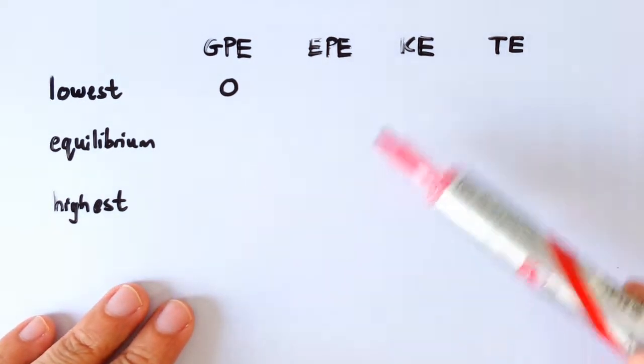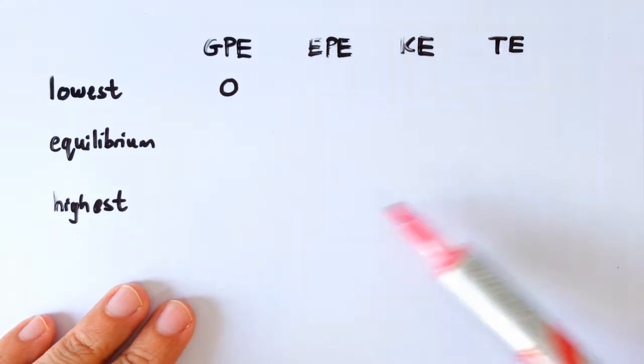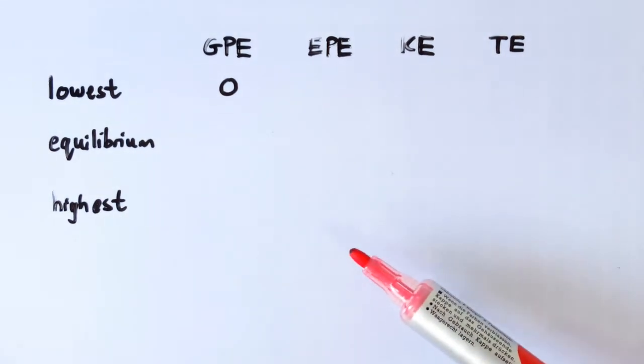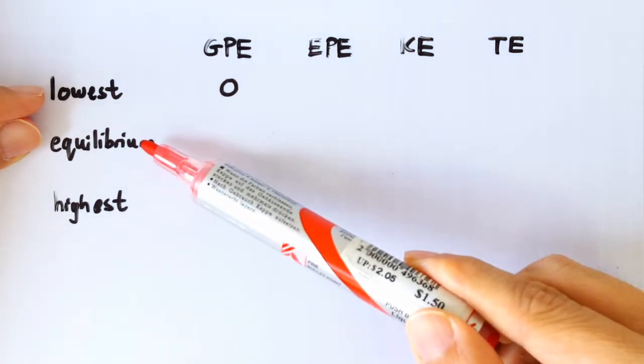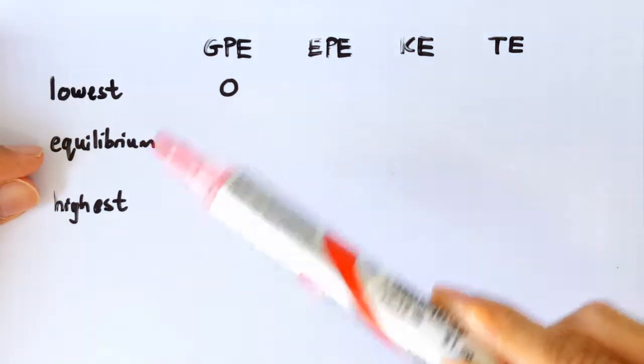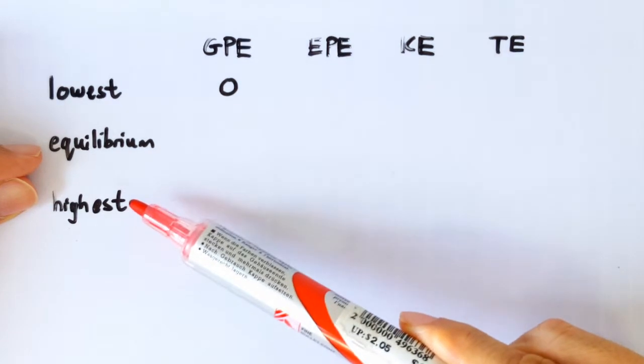I will very quickly run through the sequence in which we complete this table. First thing I want to point out is the distance between the lowest and equilibrium position is of course the same as the distance between the equilibrium and the highest position.